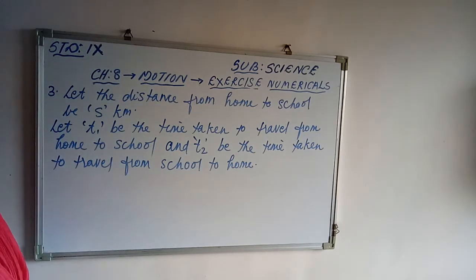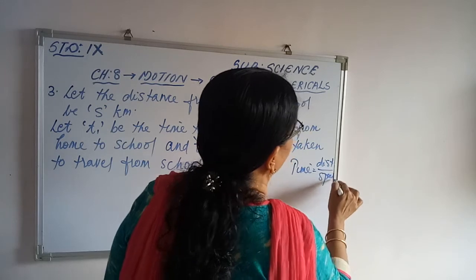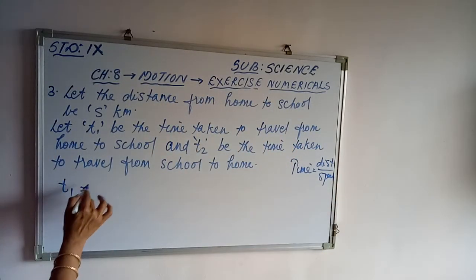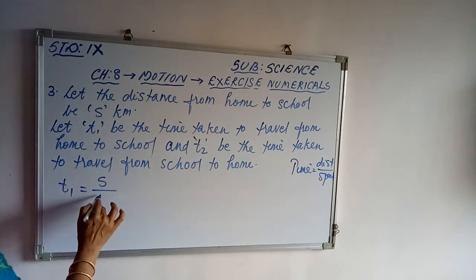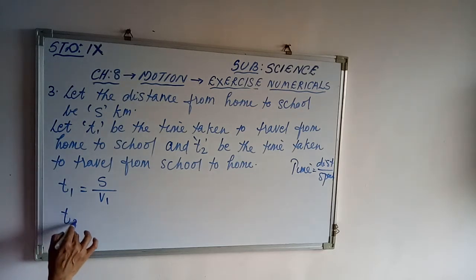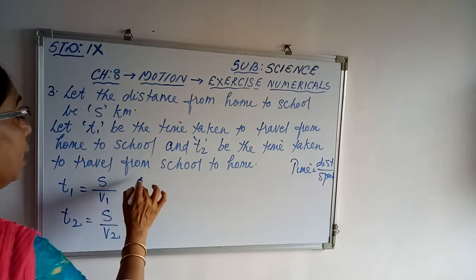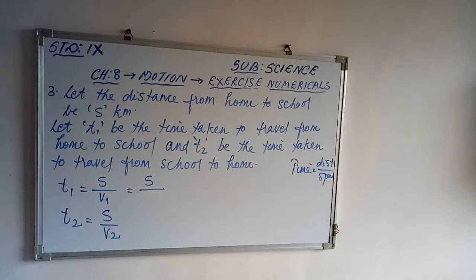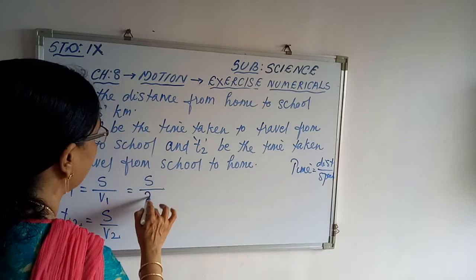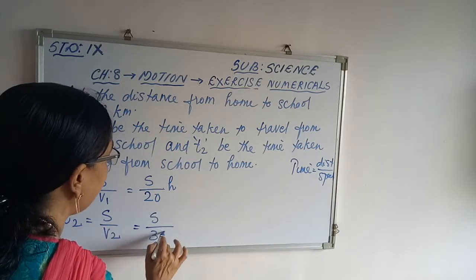We know that speed equals distance upon time, therefore time equals distance upon speed. T1 equals S/V1, where V1 is the speed going to school. T2 equals S/V2. V1 is given as 20 km/hr, so T1 = S/20 hours. V2 is 30 km/hr, so T2 = S/30 hours.